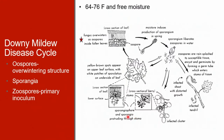The disease cycle starts with the oospores, which overwinter in infected leaves on the ground. In the spring, oospores that are embedded in the leaf tissue germinate and, after five to ten days depending on the temperature, they produce sporangia.